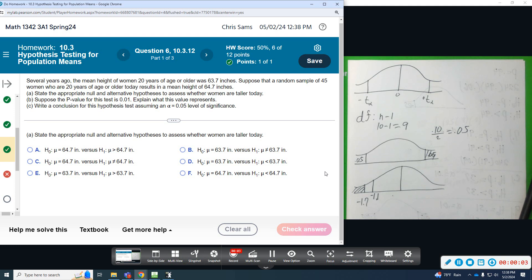Number six: Several years ago, the mean height of women 20 years of age or older was 63.7 inches. Suppose a simple random sample of 45 women who are 20 years of age or older today results in a mean height of 64.7 inches. We're going to answer the three parts. So first, we're going to state the appropriate null and alternative hypotheses.